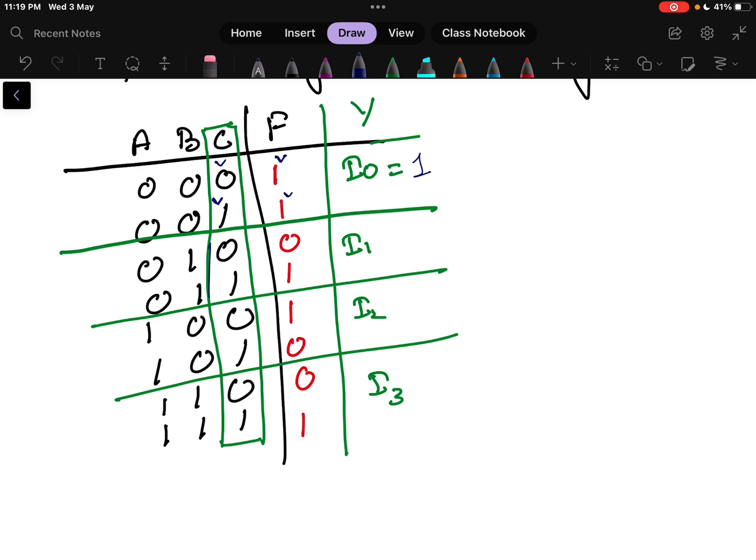Next is if here C value equals 0, the output equals 0. If the C value equals 1, then the output equals 1. That means this I1 value equals whatever the value of C is there.